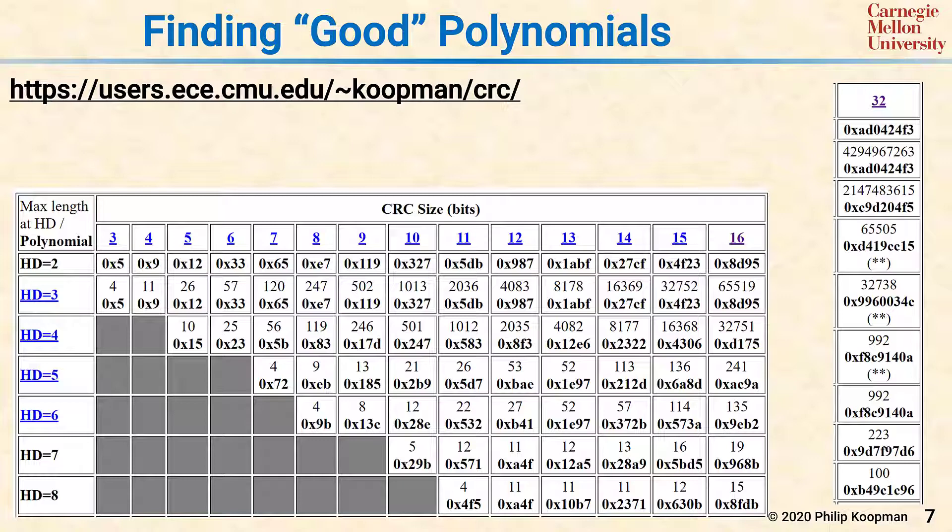These tables have exhaustively explored, with only a couple of exceptions, all possible polynomials from 3 bits through 32 bits and even some beyond that, and will tell you the best or at least good polynomials to use for each Hamming distance at each data word length.